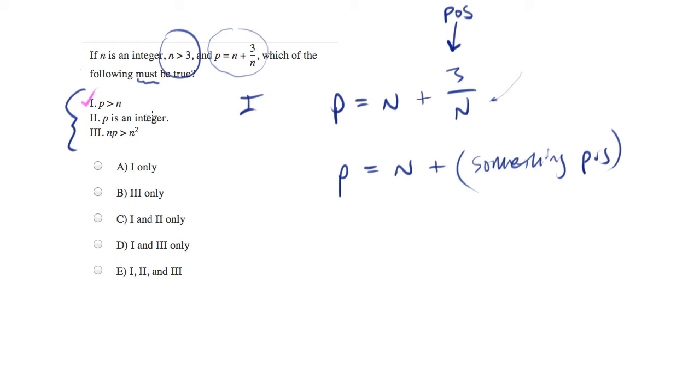Now, let's look at the second one. P is an integer. Well, let's see if we can try to disprove this. And I'm simply going to pick a number for N, such as 6. I need to pick anything that's an integer that's greater than 3.